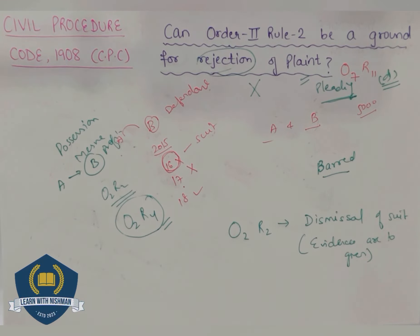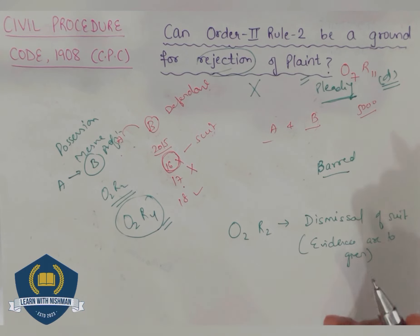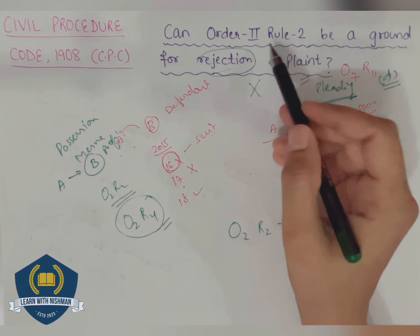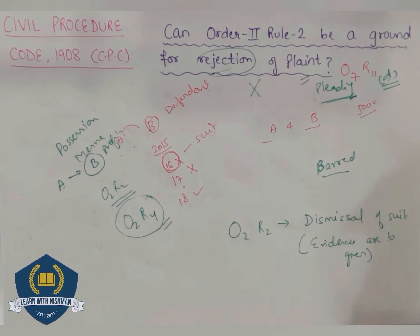I hope you now understand what Order 2 Rule 2 is basically about. On the basis of Order 2 Rule 2, rejection of plaint does not happen — it is just the dismissal of the suit. In the next session, I am going to discuss Order 2 Rules 3, 4, and 5. Till then, have a good day.